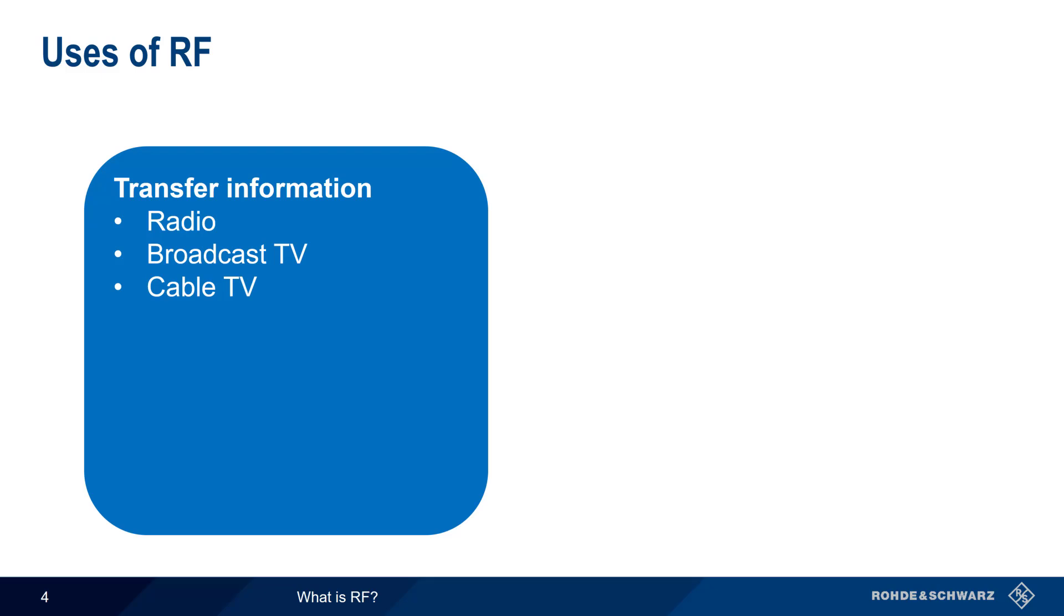And we've already mentioned that cable television also uses radio frequency signals. The properties of RF enable modern data transmission technologies, such as Wi-Fi, cellular voice and data, Bluetooth, etc. And obviously, the ability to transmit information through space is extremely important for satellite applications, including GPS.